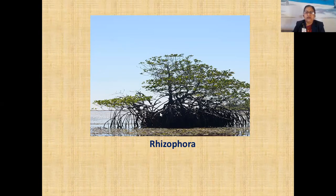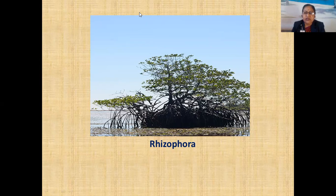In summary, today's lecture covered: types of angiosperm on the basis of habitat, morphology of root, regions of root, types of root — tap root and adventitious root — and modifications of root for food storage and for respiration. Thank you.